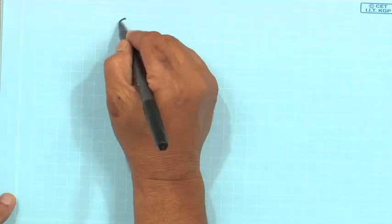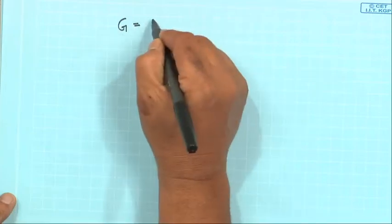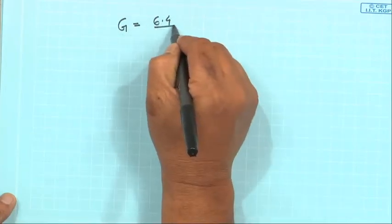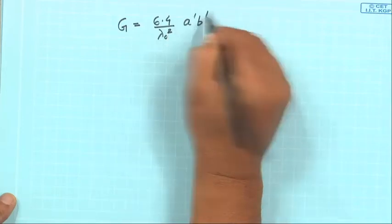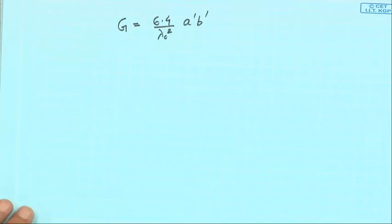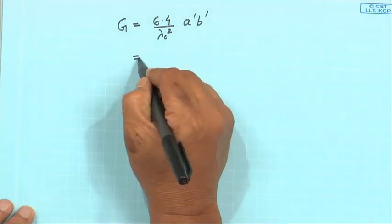Suppose the problem is: a gain is specified, I want so much gain from a pyramidal horn, and the feed waveguide dimension is known. Now, how do I do the flare? That is the actual design problem. We will fix a formula — the same formula we used, the standard formula — and now I will just manipulate it.